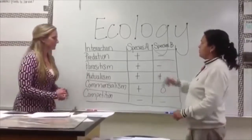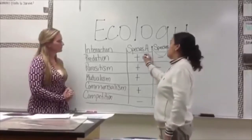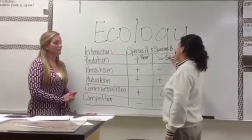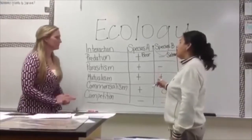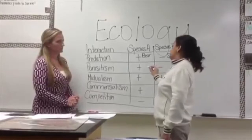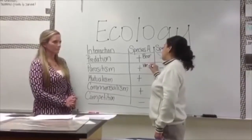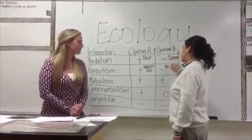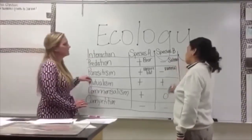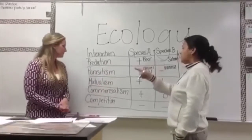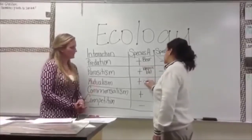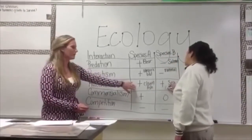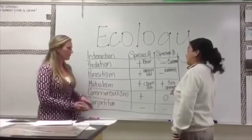Let's put some examples up here. For predation, we have the bear — the bear benefits while the salmon does not. For parasitism, we have the vampire bat and a mammal, where the vampire bat lives off that mammal and ends up hurting it in the long run. For mutualism, we have the clownfish and the sea anemone: the clownfish gains protection from predators while the sea anemone gets cleaned and has the clownfish there for protection as well.